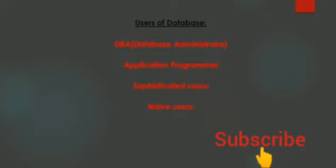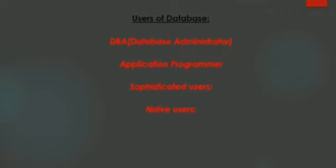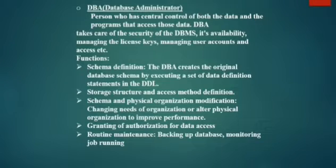Uses of Database. There are mainly 4 types of users in a database. The first one is DBA or Database Administrator. The second one is Application Programmer. The third one is Sophisticated User. And the fourth one is Naive User.